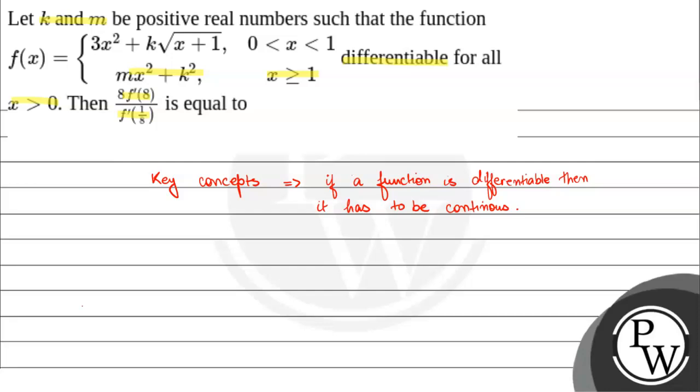Now, continuity is the characteristic where the graph is continuous. Differentiability is the characteristic where the derivative exists at each point. So now, what is the second concept we have here? At x = 1, limit as x tends to 1⁻ of f(x) equals limit as x tends to 1⁺ of f(x). So here is our left-hand limit and here is the right-hand limit.